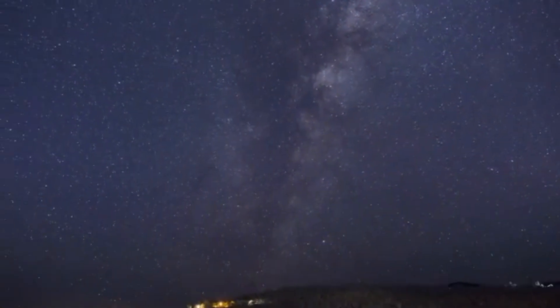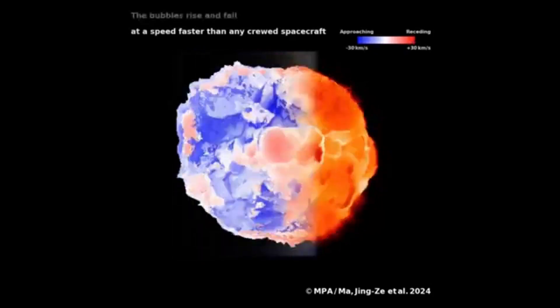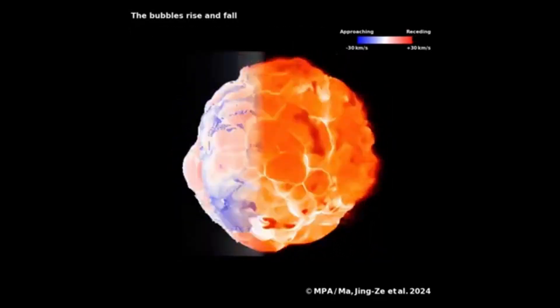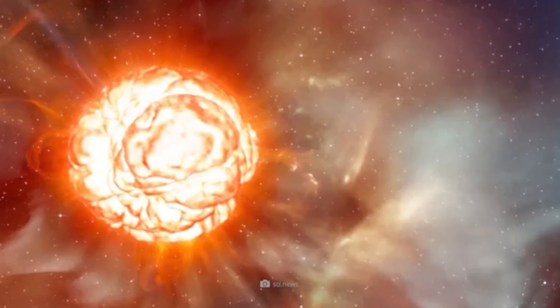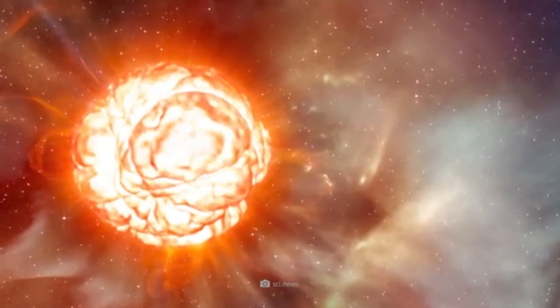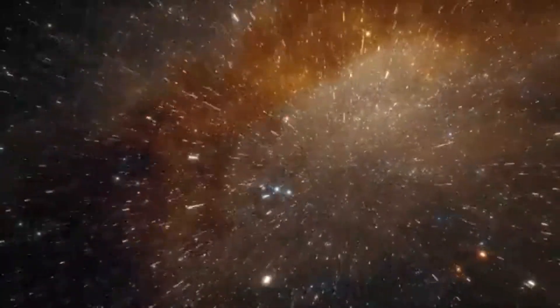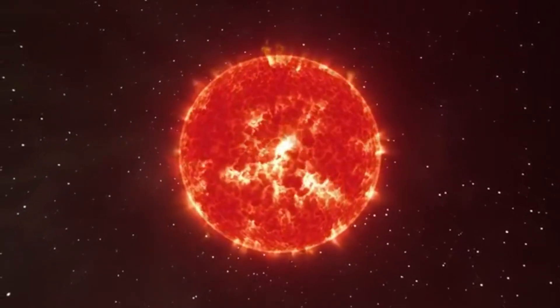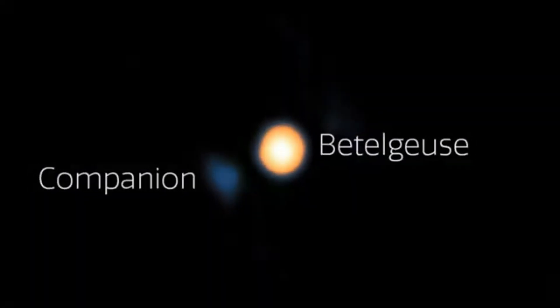Scientists are certain Betelgeuse will eventually explode in a cataclysmic supernova, though the exact timing remains uncertain. Despite being only about 10 million years old, Betelgeuse, at 700 times the size of our sun, has burned through its fuel far faster than our 4.6 billion-year-old star. This spells two grim potential fates for its companion. It may be pulled into Betelgeuse by gravity, resulting in a cannibalistic event within the next 10,000 years, or Betelgeuse could explode first, disrupting the companion's orbit and accelerating its own end. Either way, the future looks bleak for Sawara.